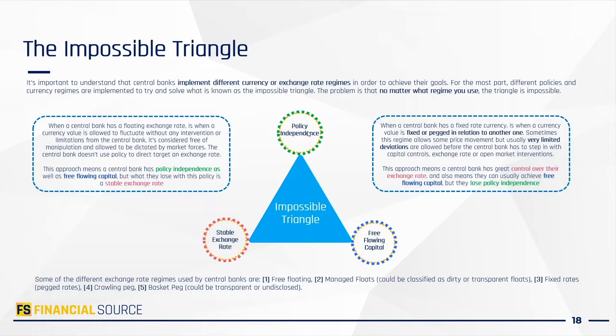The most commonly used ones are free-floating exchange rates. There are also managed floats, which can be classified as either a transparent float or a dirty float. You also get fixed exchange rates or peg rates, and things like crawling pegs and basket pegs — so there are different types of regimes used by various central banks.